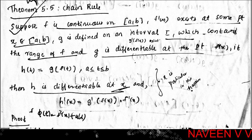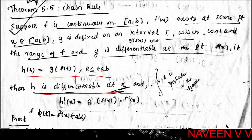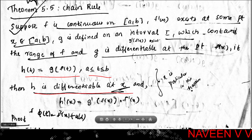Chain Rule: If h(t) = g(f(t)) for a ≤ t ≤ b, then h is differentiable at x and h'(x) = g'(f(x))·f'(x).